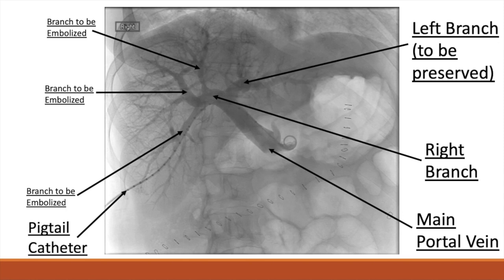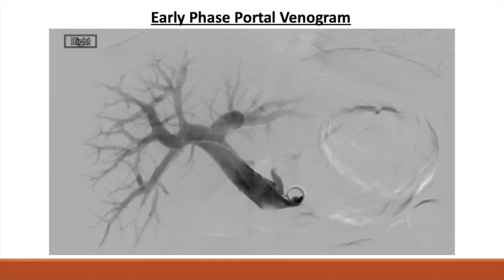In this image, we can see the left branch and the right branch of the portal vein. Coming off of the right branch, we can see multiple branches which will be embolized — all labeled. This is an image of an early phase portal venogram on DSA. We will be using these next three images as an example of how the venogram will change after embolization later in the presentation.